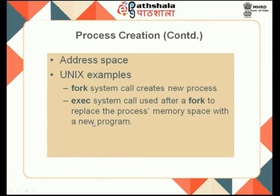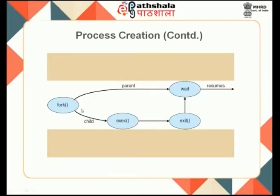The exec system call in Unix is used after a fork to make the child process execute a different program, because after a fork the child will only execute the same code as the parent process. If you want the child to do something else, you can use the exec system call. Looking at the diagram, a process does a fork which creates a child process. The parent can wait till the child exits, and the child can either continue executing the same code or use exec to execute something else.